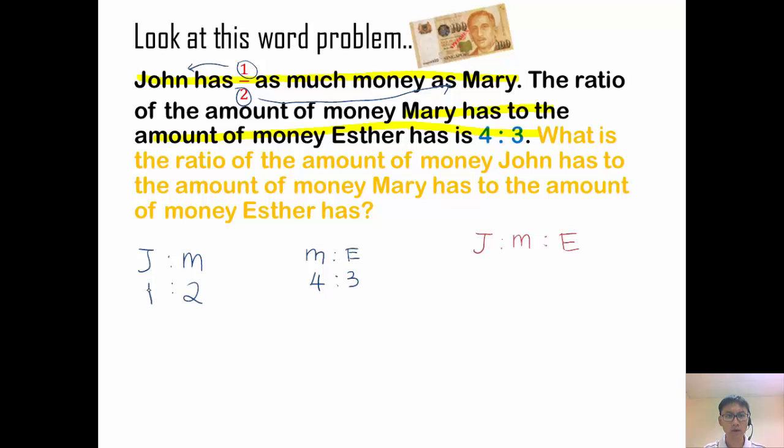But my ratio is separate. I have 2 separate ratios. How do I combine them together? I know that John has 1 unit. Mary, here she has 2 units. In this case, she has 2 units. In this case, she has 4 units. So which is it? Is it 2? Is it 4? What do I write down here? Esther has 3, so maybe I can write 3 here. So how do I do that?